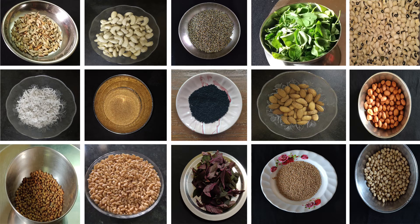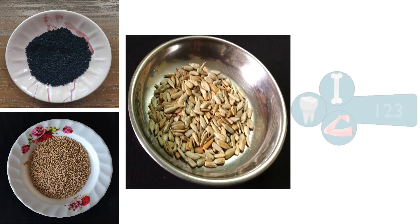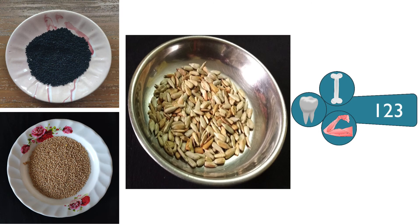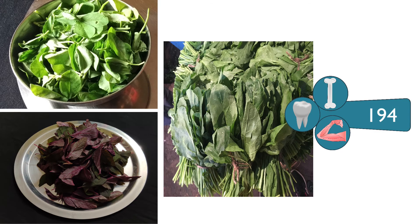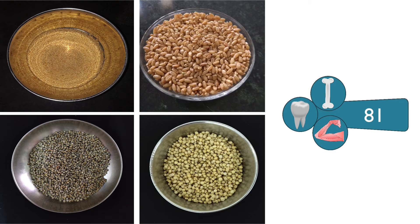Let's take a quick look at the nutrient content found in these food sources. 30 grams of beans have around 64 milligrams of magnesium. 2 tablespoons of seeds have roughly 123 milligrams. 100 grams of leafy vegetables have about 194 milligrams. 20 grams of nuts have around 61 milligrams, and 30 grams of grains have nearly 81 milligrams.